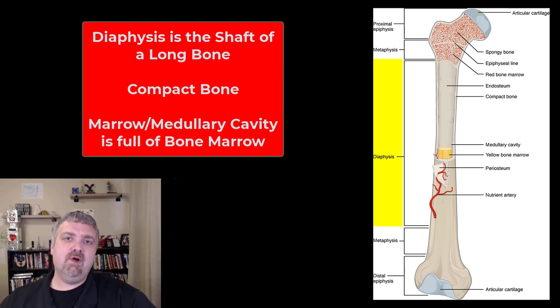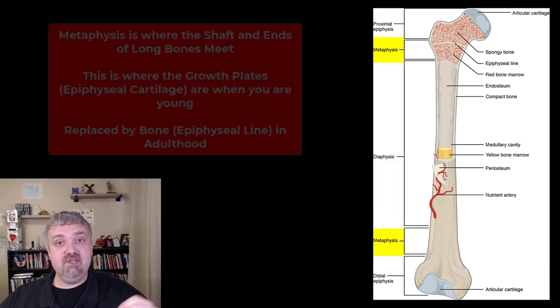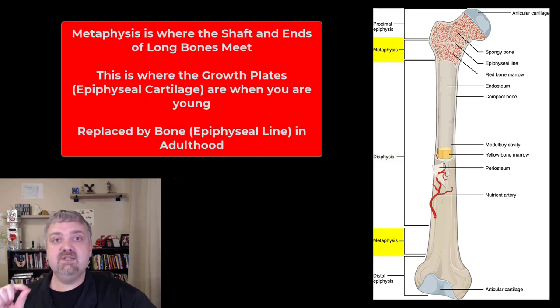The two ends of your bones are called the epiphyses and the shaft itself is called the diaphysis. Where the shaft and the two ends come together is called the metaphysis. When you're young this is where the epiphyseal plate or your growth plate is. As you get older and bone lengthening has ceased, you'll see what's called the epiphyseal line.